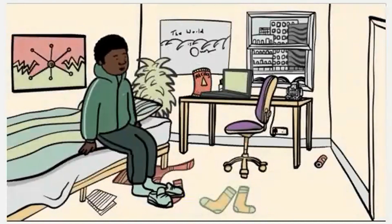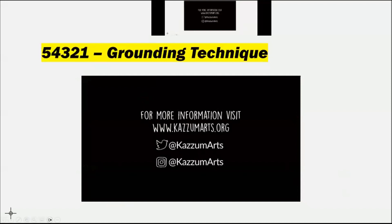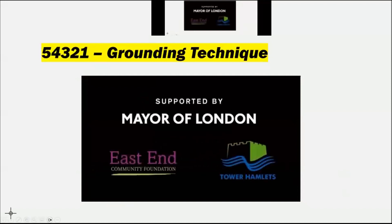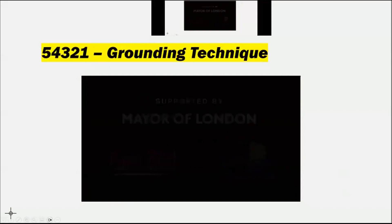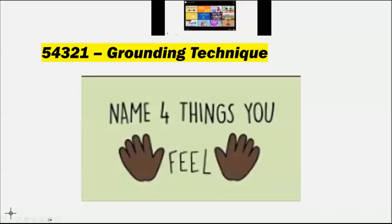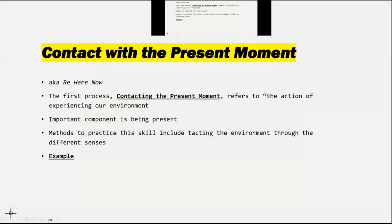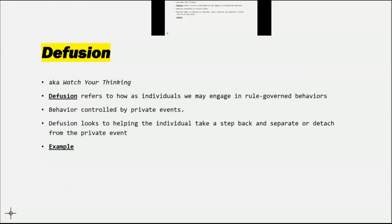With that specific exercise, what it's meant to do is bring a person to experience a little bit more awareness to what's happening in the moment. With present moment awareness, if somebody's unable to do that, they're thinking about things that have happened in the past or things that will happen in the future. Can there be a way to bring that person to the moment — at least momentarily — so that the focus shifts from what they've been experiencing or feeling to what's happening in front of them? The next process is diffusion, also known as 'watch your thinking.'